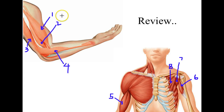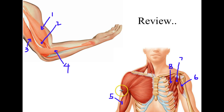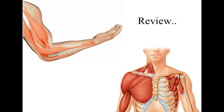The answers: number one is the biceps brachii; number two underneath is the brachialis, positioned a bit lower on the upper arm; number three on the posterior side is the triceps brachii; number four running down is the brachioradialis; number five is another view of the biceps brachii on the anterior surface; number six is the coracobrachialis from coracoid process to humerus; number seven is the subscapularis on the anterior scapula; and number eight is the pectoralis minor.